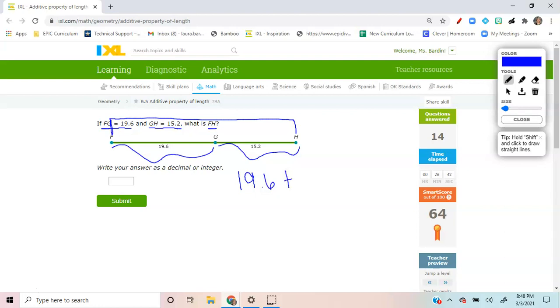19.6 plus the 15.2 is going to be equal to the F to H. So technically, let's just grab a calculator and let's add those. 19.6 plus 15.2. Talk to me. Tell me what your answer is.